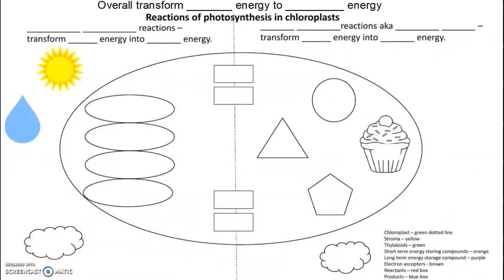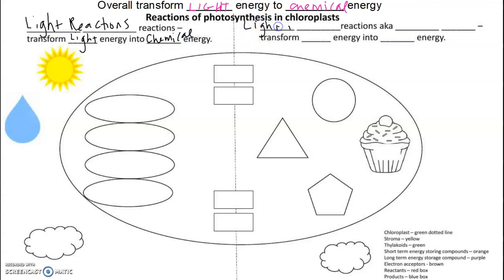Let's take a look at photosynthesis overall. What happens overall is that we transform light energy into chemical energy. This happens in two steps: we have our light reactions, which transform light energy into chemical energy, and then we have our light independent reactions — also called the Calvin cycle or the dark reactions — which transform that short-term chemical energy into longer-term chemical energy.